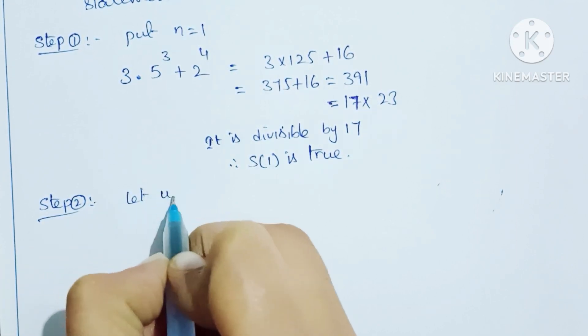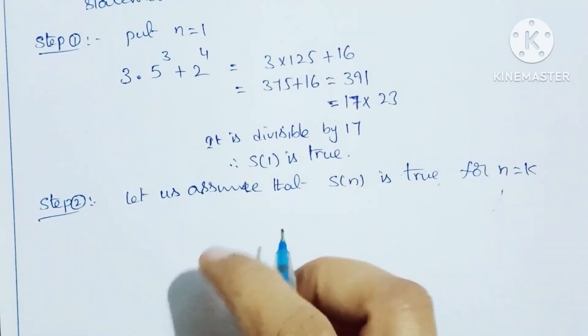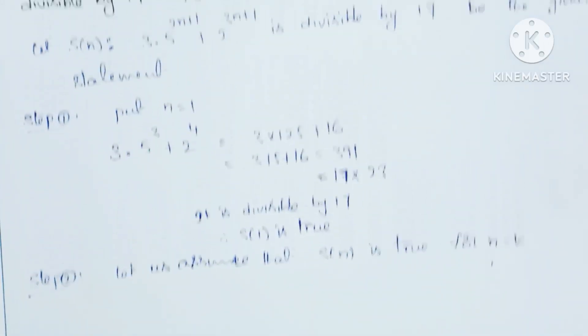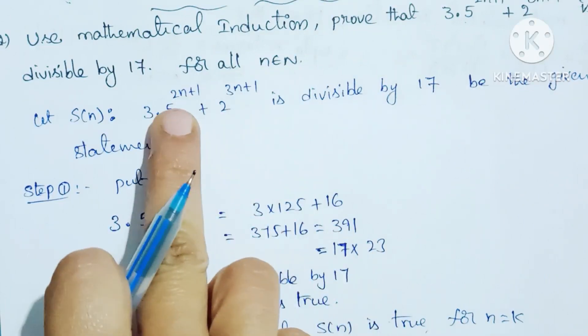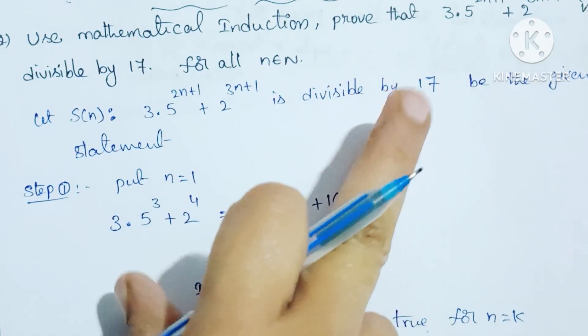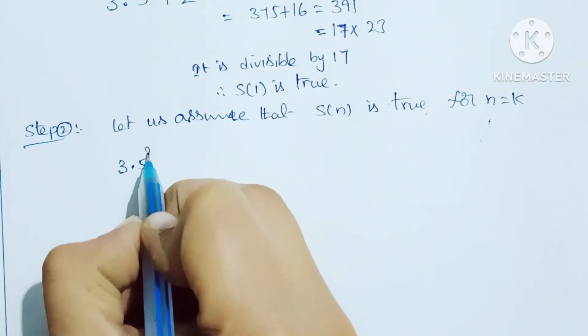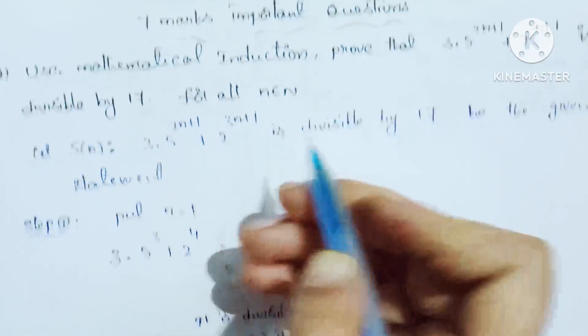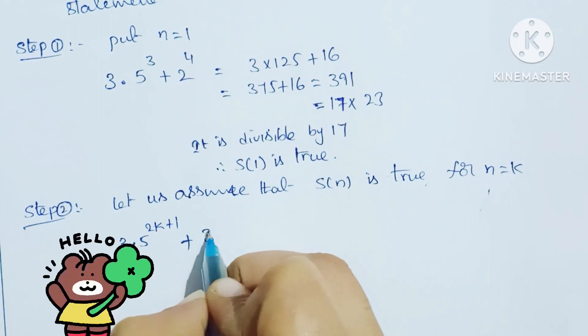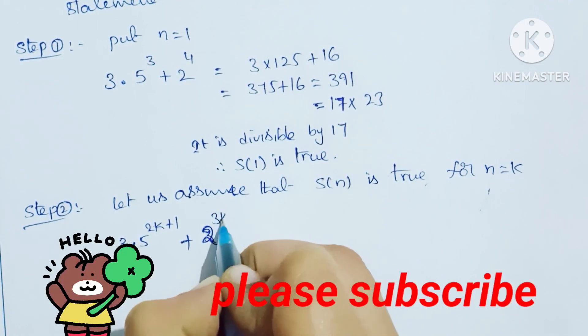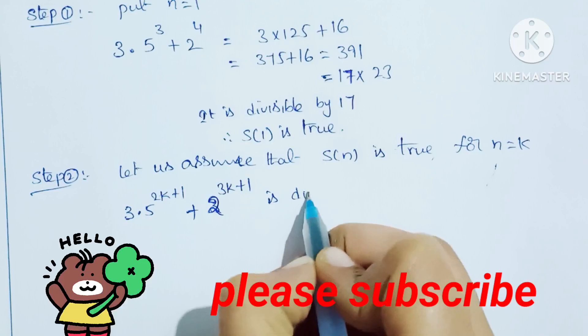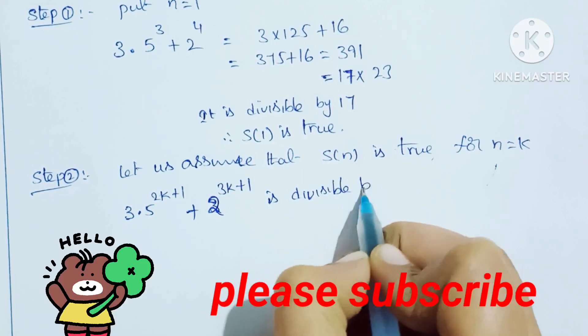Let us assume that S(n) is true for n equal to k, where k is a natural number. That is, the condition is satisfied and divisible by 17. Then 3 into 5 power 2k plus 1, substituting k in place of n, plus 2 power 3k plus 1 is divisible by 17.